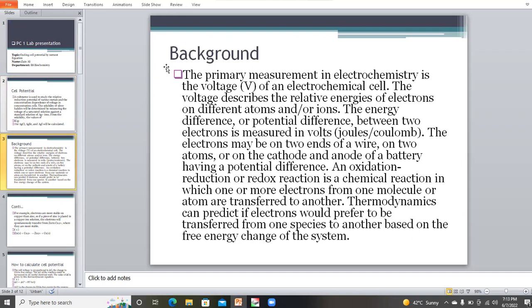The primary measurement in electrochemistry is the voltage of an electrochemical cell. The voltage describes the relative energies of electrons on different atoms or ions. The energy difference or potential difference between two electrons is measured in volts, joules per coulomb. An oxidation-reduction or redox reaction is a chemical reaction in which one or more electrons from one molecule or atom are transferred to another. Thermodynamics can predict if electrons would prefer to be transferred from one species to another based on the free energy changes in the system.